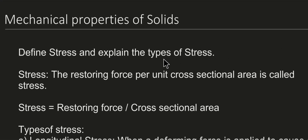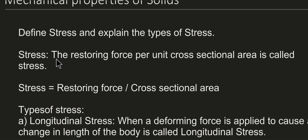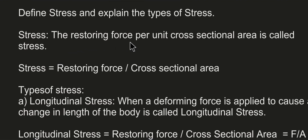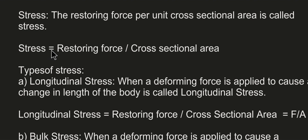Define stress and explain the types of stress. This is a four marks question from mechanical properties of solids. The definition of stress: the restoring force per unit cross-sectional area is called stress. The formula is stress equals restoring force divided by cross-sectional area, or F by A.